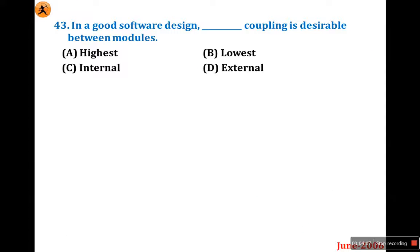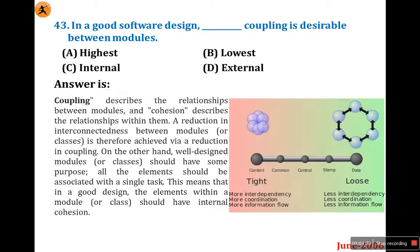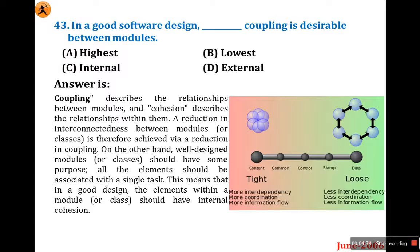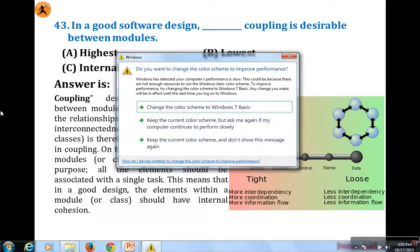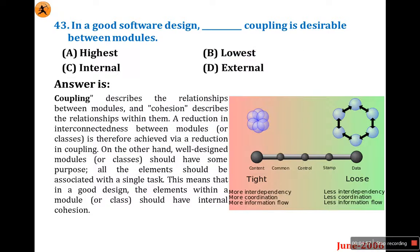Question number 43: In a good software design, what type of coupling is desirable between modules — highest, lowest, internal, or external coupling? To answer, we need to understand cohesion and coupling. Coupling describes the relation between modules, meaning the relationship between two modules. Cohesion describes the relation within a module, meaning inside a single module.